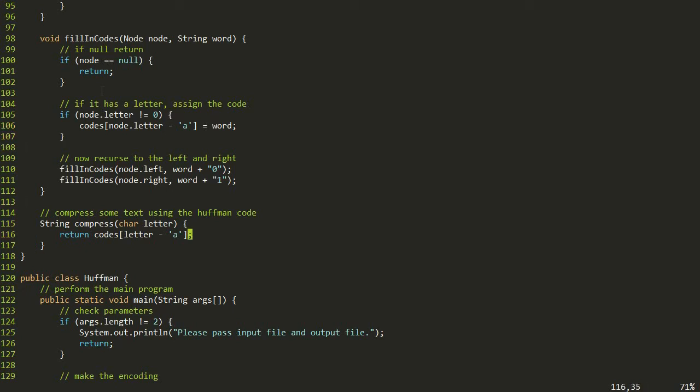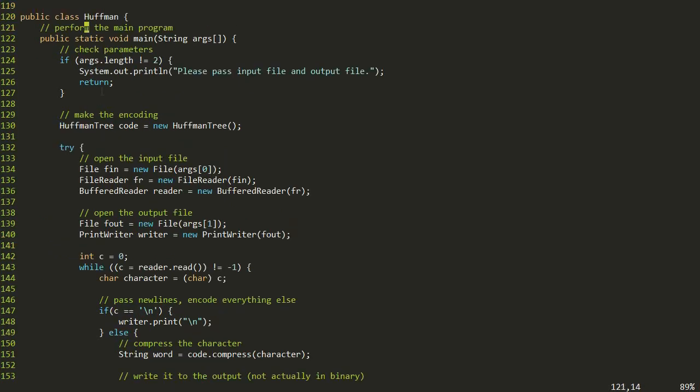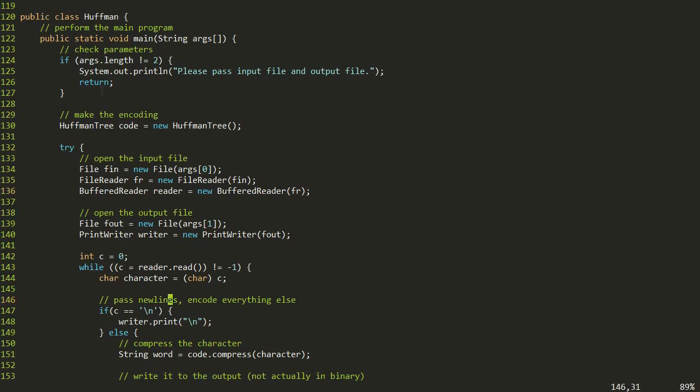Then we have lastly this method called compress that takes in a single letter and it looks in that array and gives you back whatever string of zeros and ones was associated with this letter. Then moving down, we have the main method of this. It takes in as command line arguments the input file and also the output file. It makes the Huffman tree. In this case, it doesn't even really need to look at the input we're given to make the tree because it's based on the common probabilities. Then we open up our two input files and read from the input file each character as we go. If it's a new line, we just print it out the same as it was. Otherwise, if it's not a new line, we compress it and then we write that word out into the file.